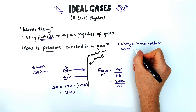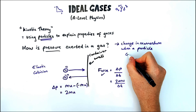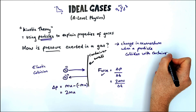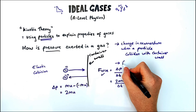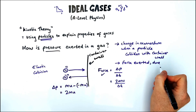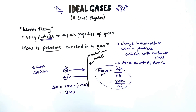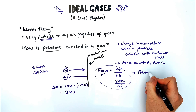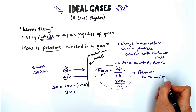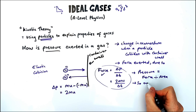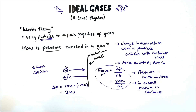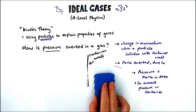In words: pressure is exerted in the gas when there is a change in momentum when a particle collides with a container wall — due to a change in direction of the particle, therefore there's a force exerted. You can quote the equation F = Δp/Δt here. Since pressure equals force divided by area, if there's a force on a certain area, there's a pressure from each particle colliding, giving an overall pressure on the container.